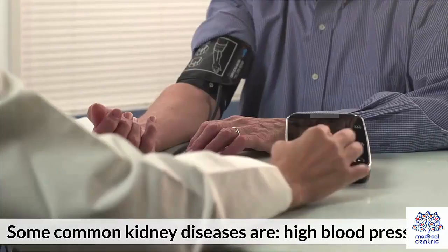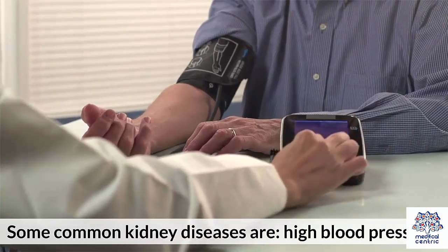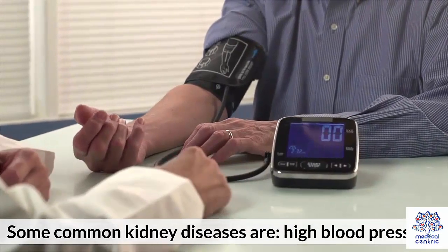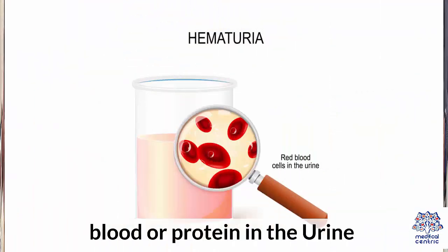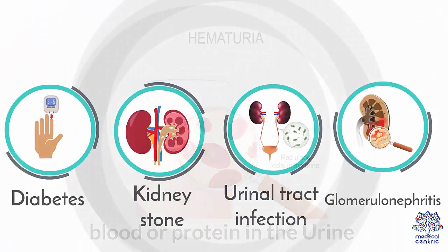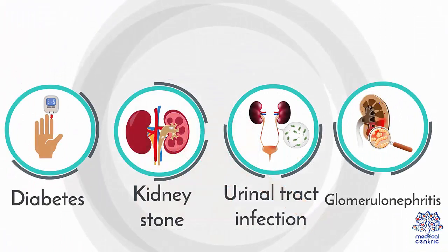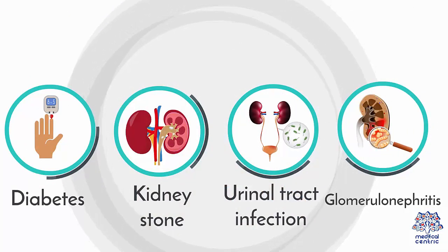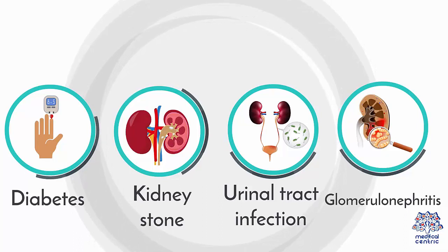Some common kidney diseases are high blood pressure, diabetes, kidney stones, urinary tract infection, and glomerulonephritis, while some are inherited.